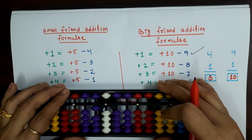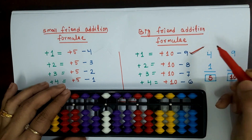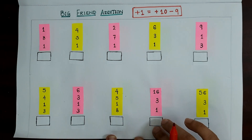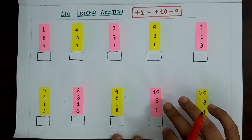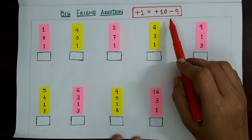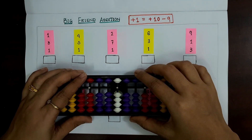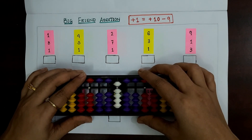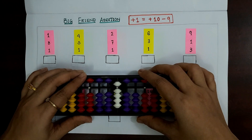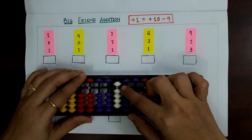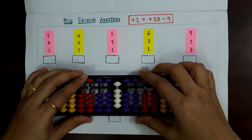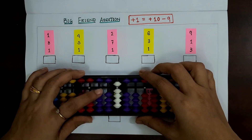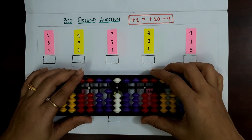Today we will be solving some examples based on the formula plus 1 equals plus 10 minus 9. Our first example is 1 plus 8 plus 1. We cannot use the small friend addition of plus 1, which equals plus 5 minus 4, because we have already used the upper beads whose value is 5. In this case, we have to take the help of the 10 slot beads. So plus 1 equals plus 10 minus 9. Answer is 10.